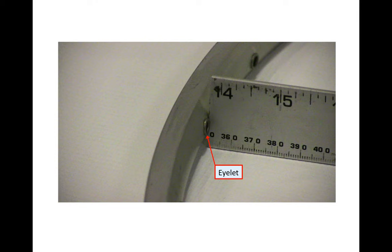Now, if you have a rim that has eyelets, for example as shown there, make sure you position your ruler next to the eyelet, not on top of it.